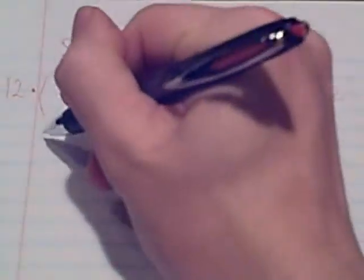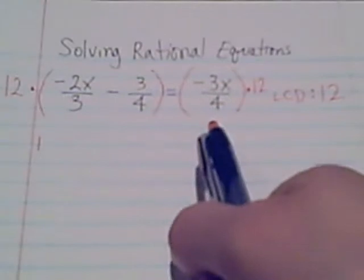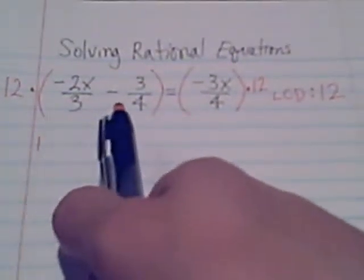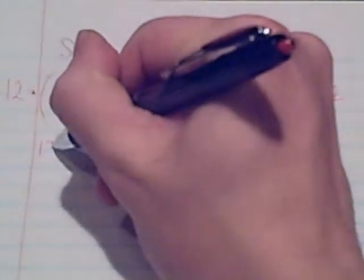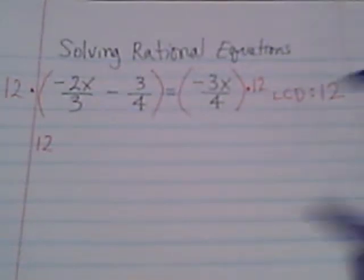Here's what we're going to do. I just laid out that we're multiplying by 12 on both sides. But what we really want to do is multiply 12 to every single term that we see. So I'll have 12 times the first term, negative 2x over 3.